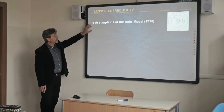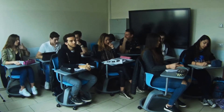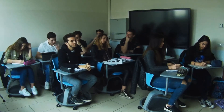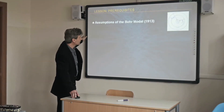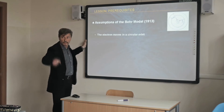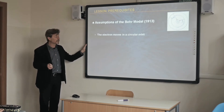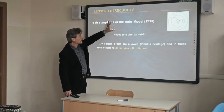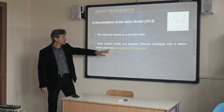Bohr, as a physicist, made some assumptions. Do you remember some of his assumptions? Giacomo? Some assumptions of the Bohr model are that electrons move in a circular orbit. And these electrons in certain orbits lose energy. This is the most important problem, because an electrically charged particle, according to Maxwell's theory, loses energy because it is accelerated. So Bohr introduced an orbit in which this does not happen — in this orbit, electrons do not give off radiation.